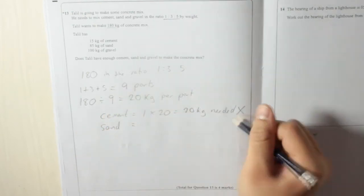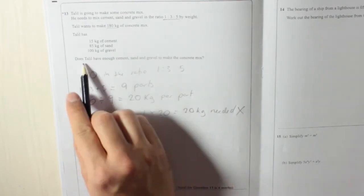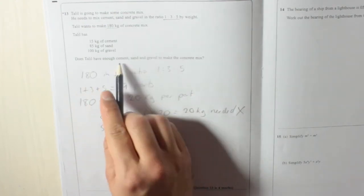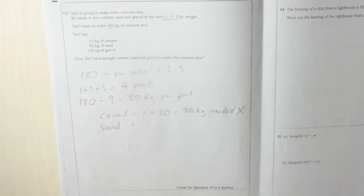Sand equals... You could stop there and you could write down no, you don't have enough cement. But then again, it does ask for cement, sand and gravel - it is saying three things. So maybe just in case it wants you to do each individual one, you better carry on.